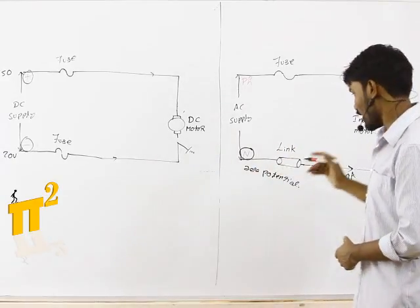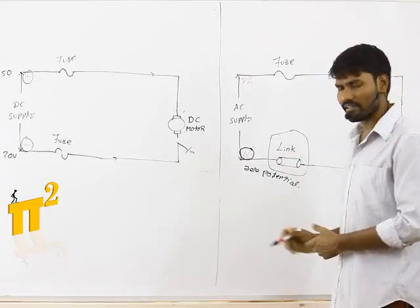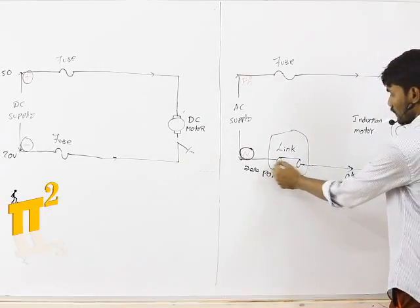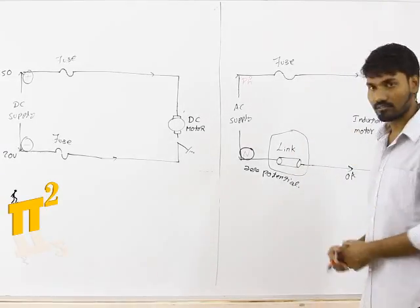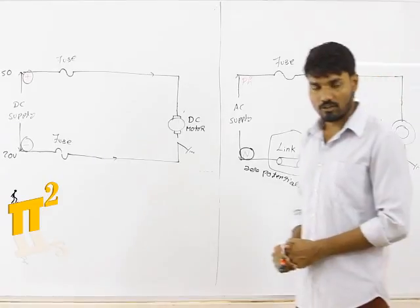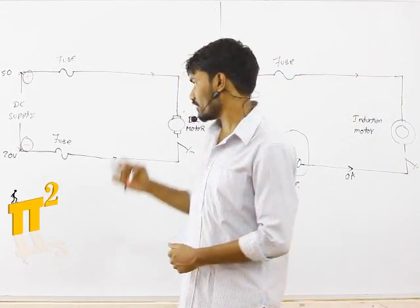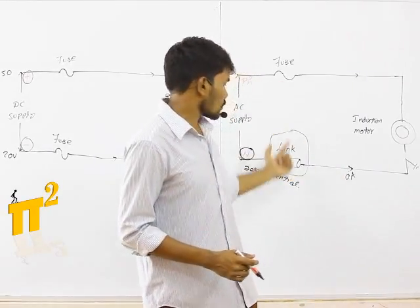That's why I don't use any fuse, we just use link. Link means it is just a connection from this point to this point, direct connection. We don't use a special material fuse material here. I hope you understand why in case of DC we use two fuses, in AC only one fuse, one link.